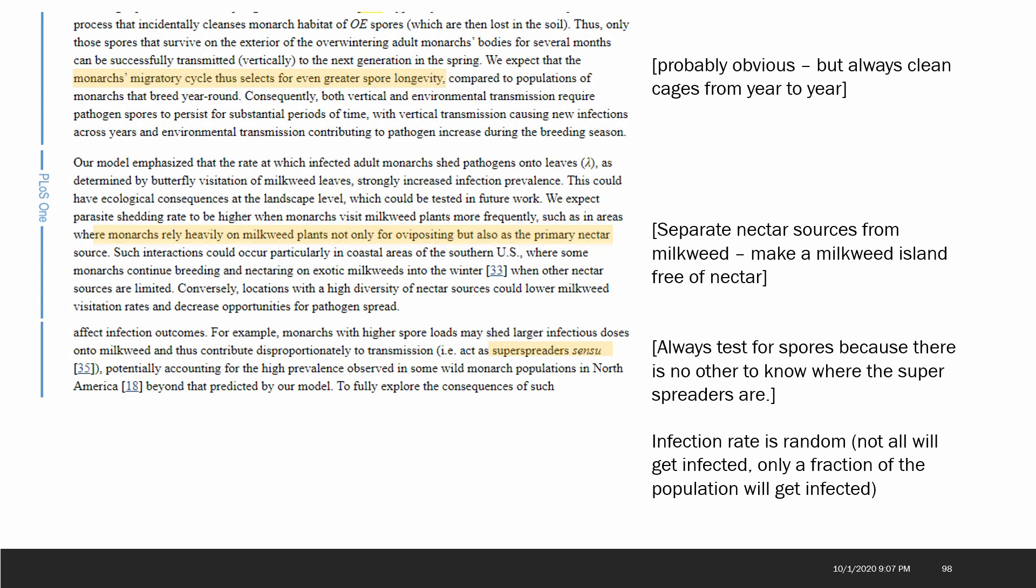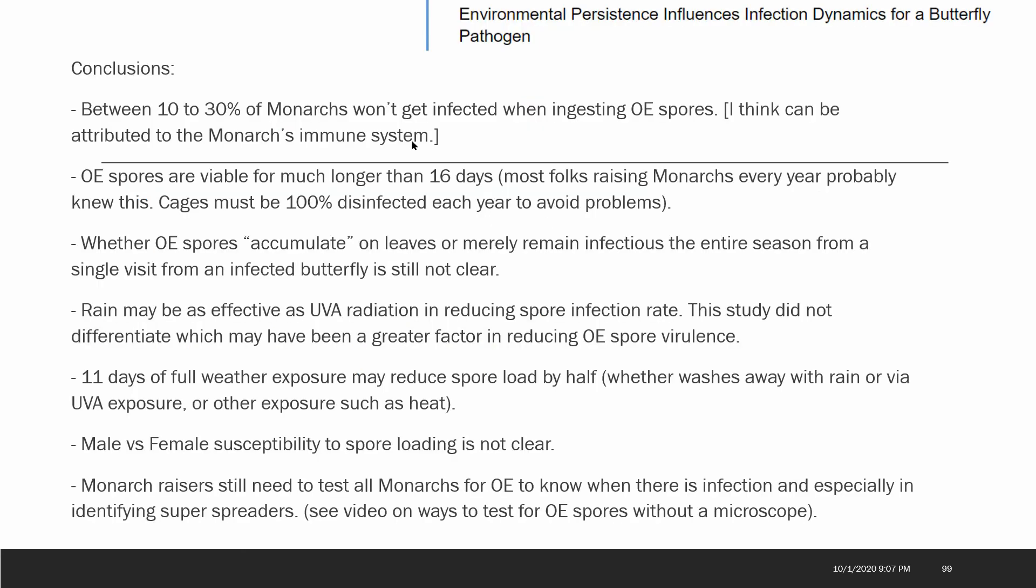Here are some conclusions from this research report. Between 10 and 30 percent of monarchs won't be infected by ingesting OE spores, and I think this can be attributed to the monarch's immune system. The more we can do to help the immune system of the caterpillar, the better off I think that will be. OE spores are viable for much longer than 16 days, and most folks that are raising monarchs every year probably knew this. Be sure to clean your cages 100% each year to avoid problems. I think currently the best way is to use bleach, but I'm also looking at some other methods.